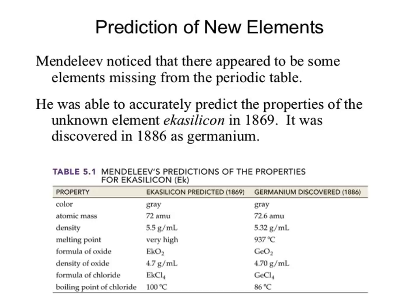We can look at nuclear stability — there are trends within that which show us that certain elements exist for longer than we would predict. That's nuclear physics and outside the scope of this class. And when it falls apart, that is known as radioactivity — it falls apart in very particular fashions.